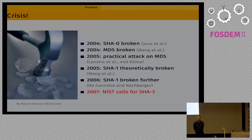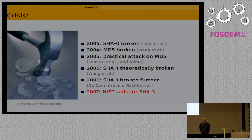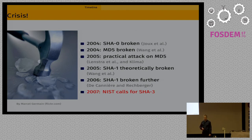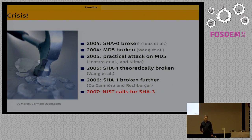The story begins around 2004-2005, when the most popular hash functions, MD5 and SHA-1, got severely broken. At the time, there was also the SHA-2 hash function designed by NSA, but it was based on the same design principles as MD5 and SHA-1. There was fear that maybe these attacks would extend to SHA-2. So NIST decided to create a new hash function called SHA-3, but not on their own — they would do that via an open competition.